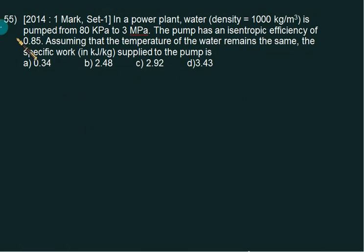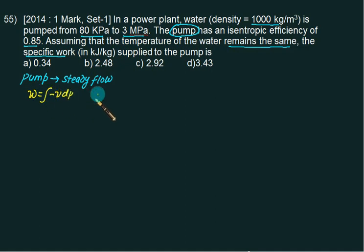In a power plant, water with density equal to 1000 is pumped from 80 kPa to 3 MPa. The pump has an isentropic efficiency of 0.85. Assuming the temperature of water remains constant, we want to calculate specific work. The pump is a steady flow process, and for steady flow process, the specific work w is given as the integral -v dp.